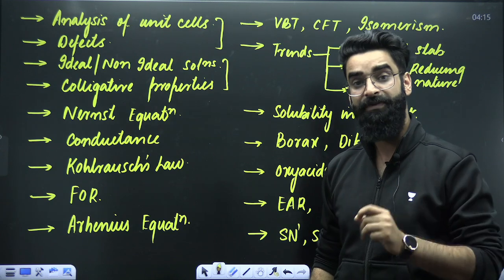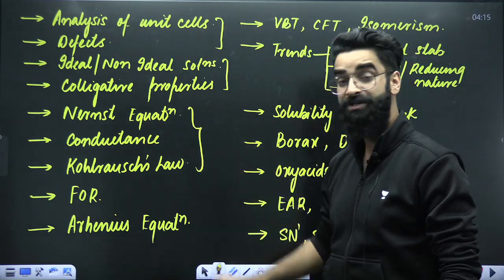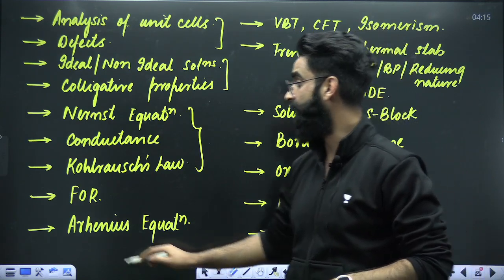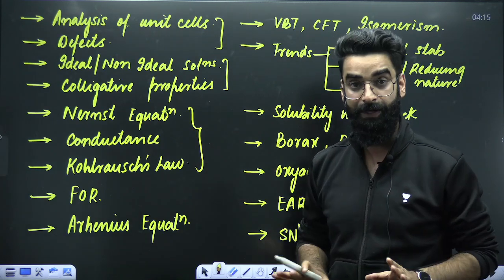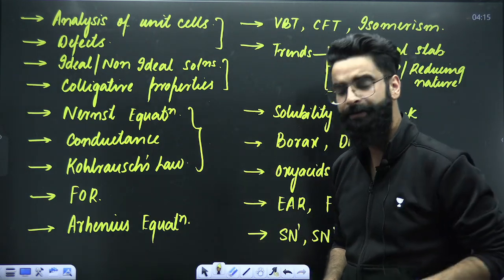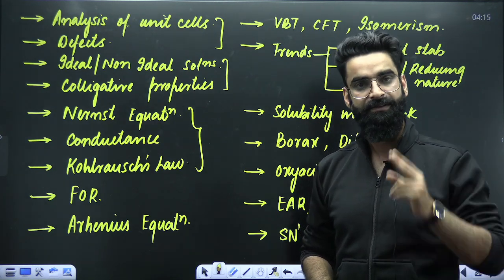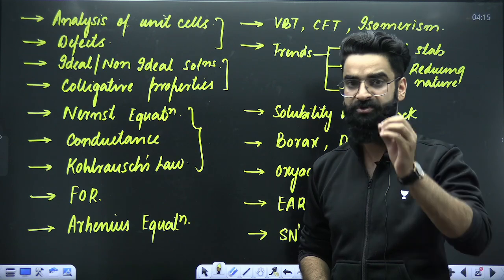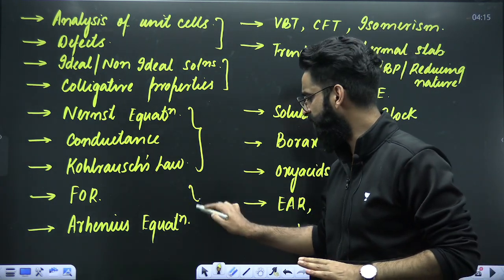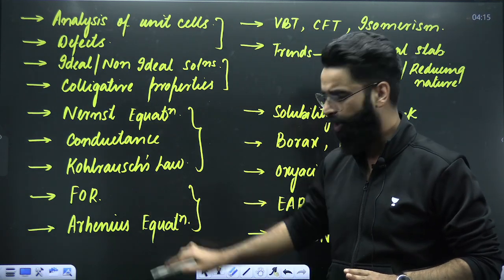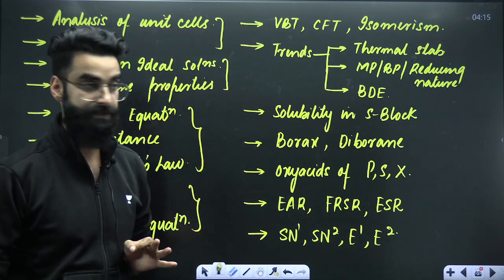As far as electrochemistry is concerned — from which two to three questions are asked every year — the three topics are: Nernst equation, conductance, and Kohlrausch's law. Do not skip these at all. When you talk about chemical kinetics, the two topics that come to mind from which questions almost always appear are: questions based on first-order reactions and the Arrhenius equation. These two topics must be prioritized.